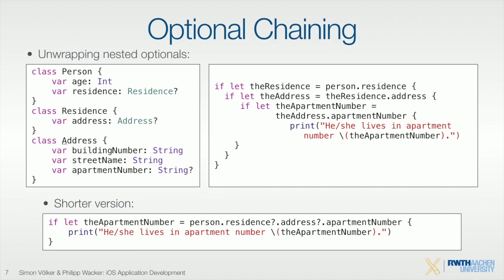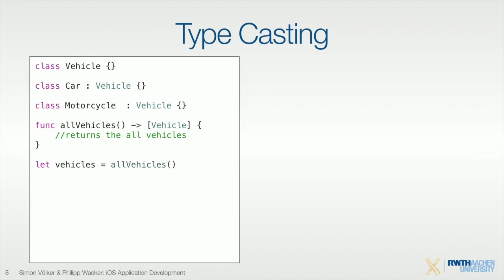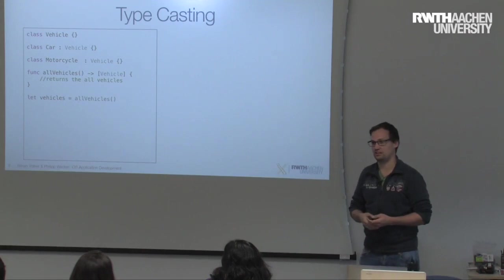Let's talk about typecasting, which is related to optionals. Swift is extremely strongly typed — you even have to cast between an integer and a double if you want to add them. Let's say we have a superclass Vehicle, with subclasses Car and Motorcycle. You get an array that could contain any of these, and you want to check what type each object is.